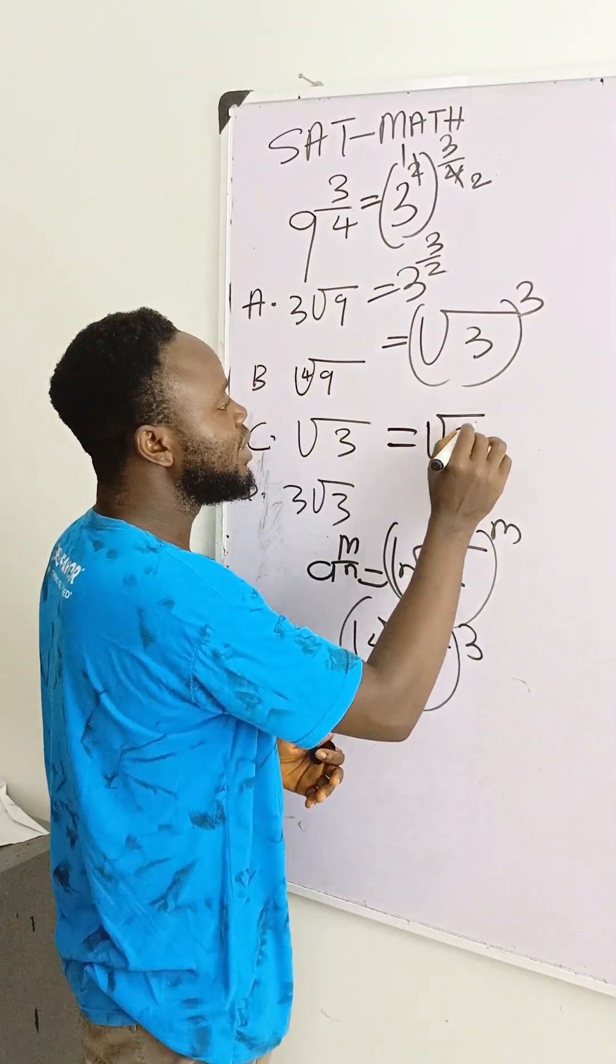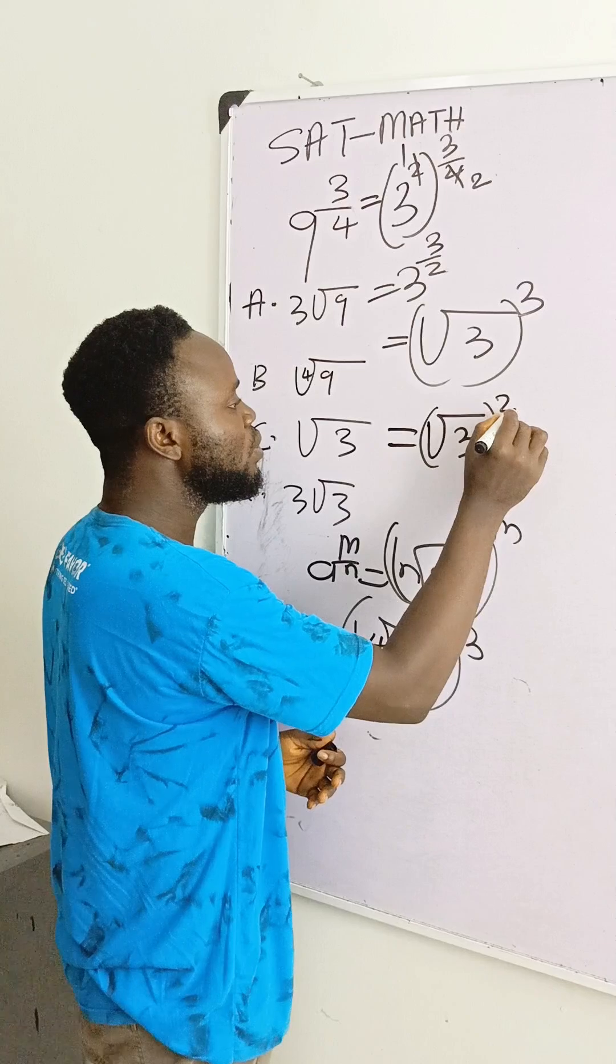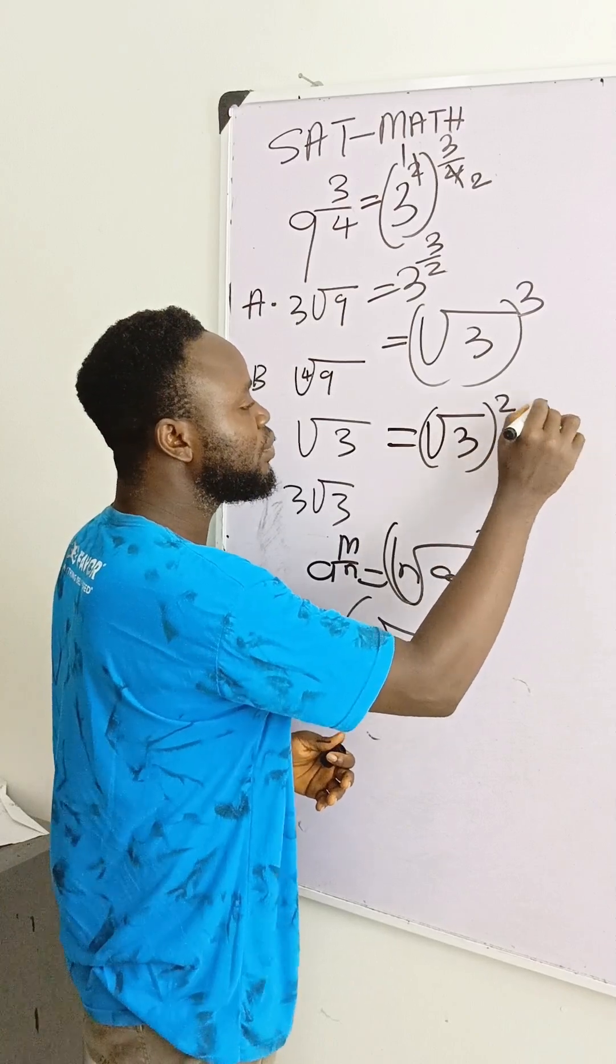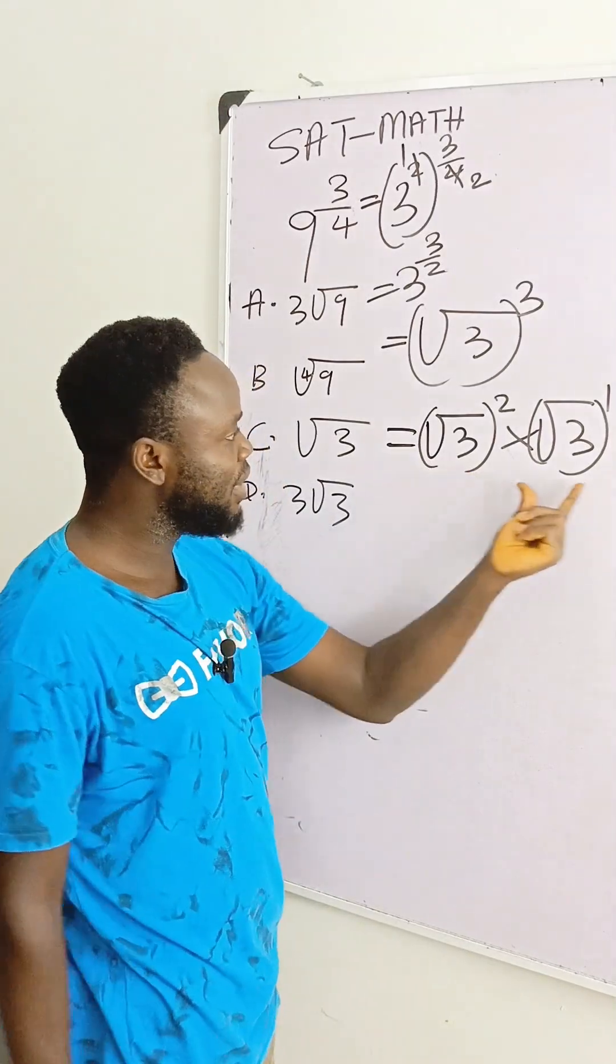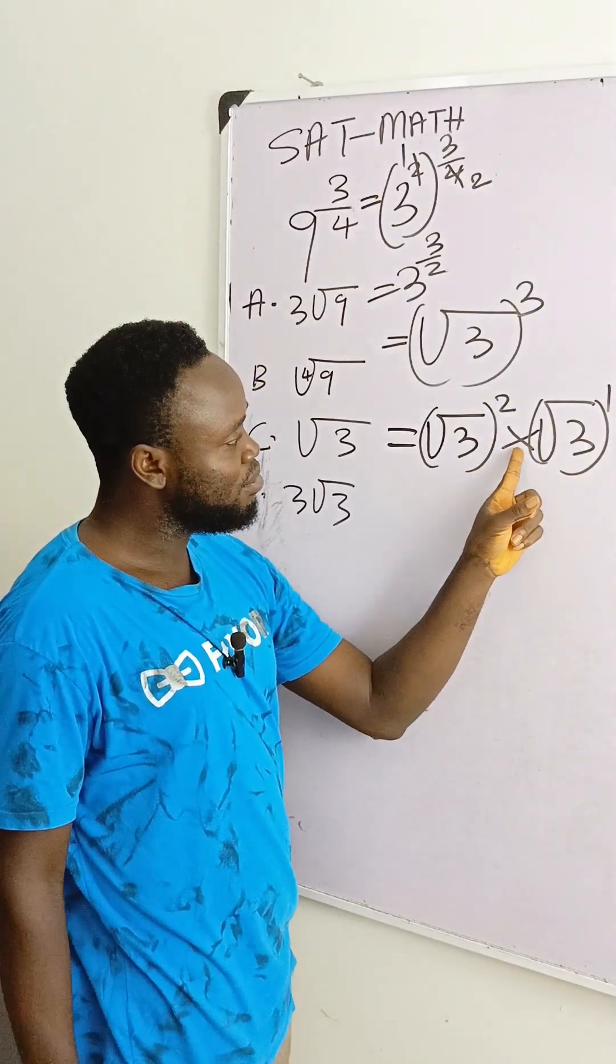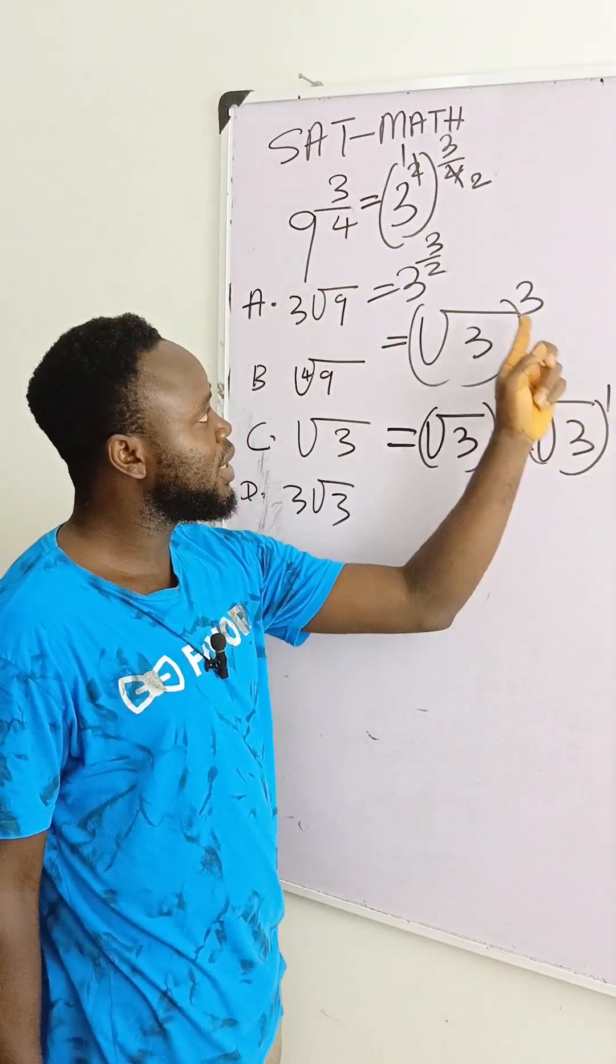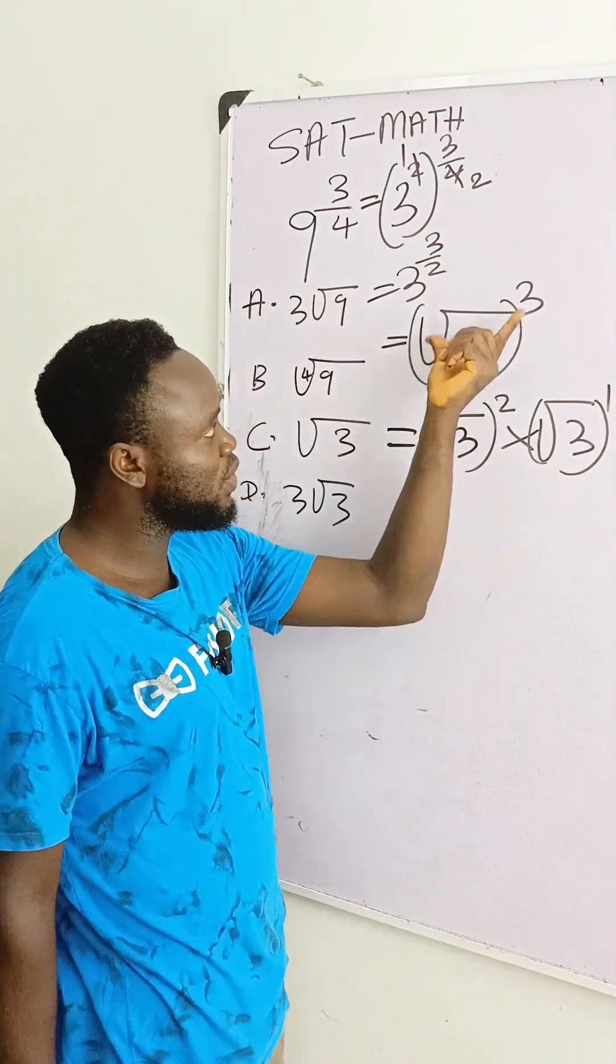Square root of 3 raised to power 2 times square root of 3 raised to power 1. Why did I do it like this? The same basis. Then, multiplication, you add the exponents, it gives you back this. So this one is equal to this one.